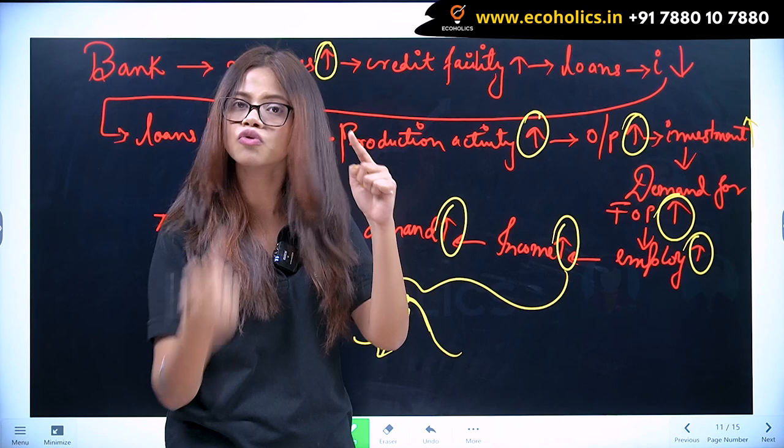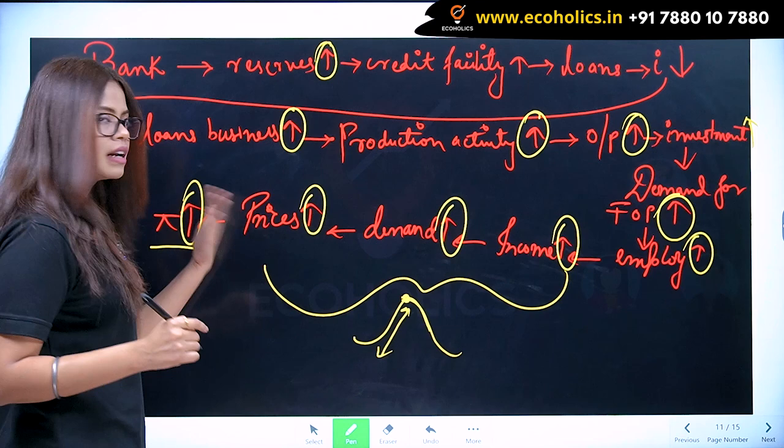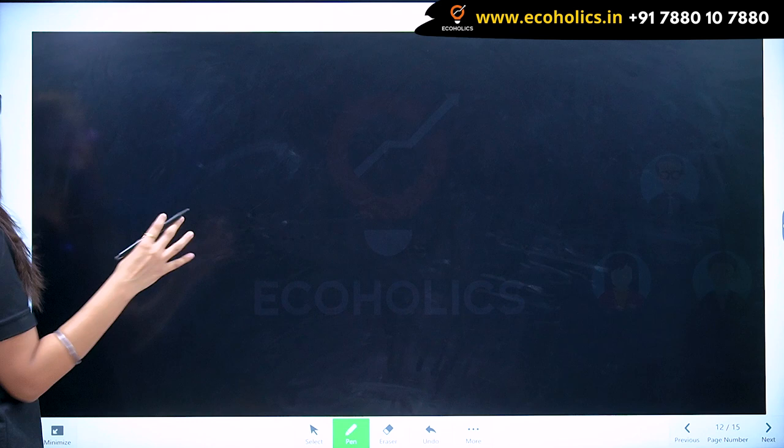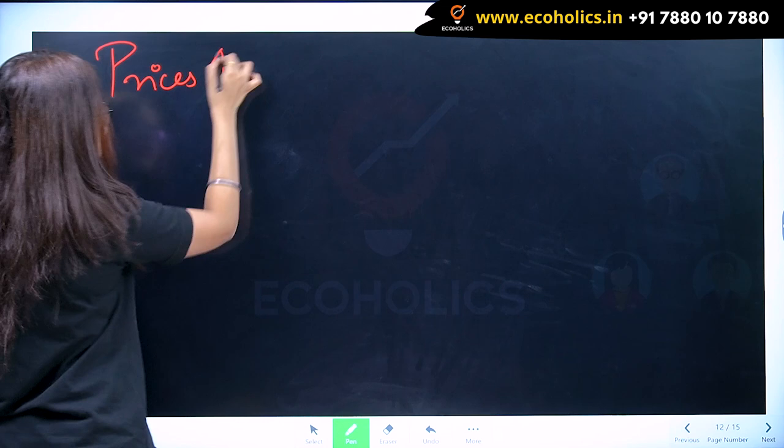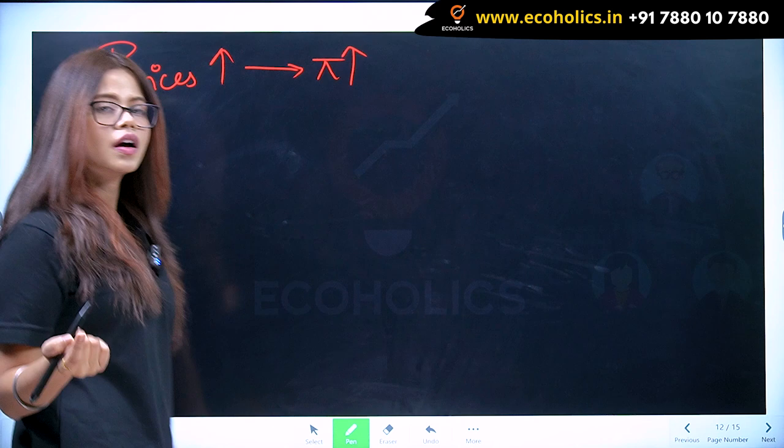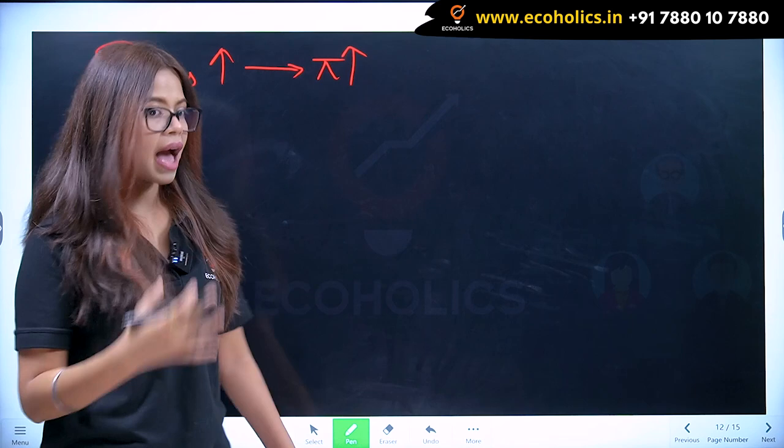Now we told the story that prices are increasing and profit is increasing. Now we will see what happened next. Expenses are increasing, prices are increasing, profit is increasing. Now the other business owners have seen that profit is increasing, so they also want to take credit. Now they have a lot of reserves — but the reserves were not enough when they wanted to increase their credit facilities.